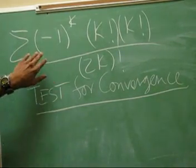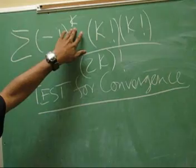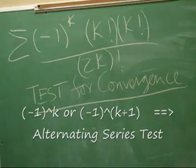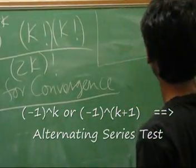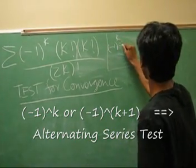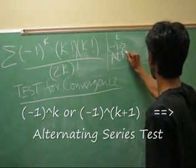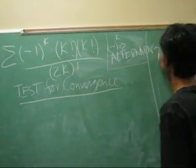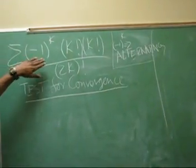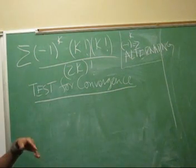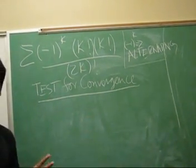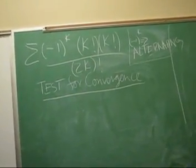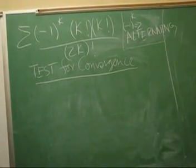A couple of hints: if you ever see negative 1 to the k, always use the Alternating Series Test. Since this is negative 1 to the k, we're going to be using alternating. Let's look at the criteria.